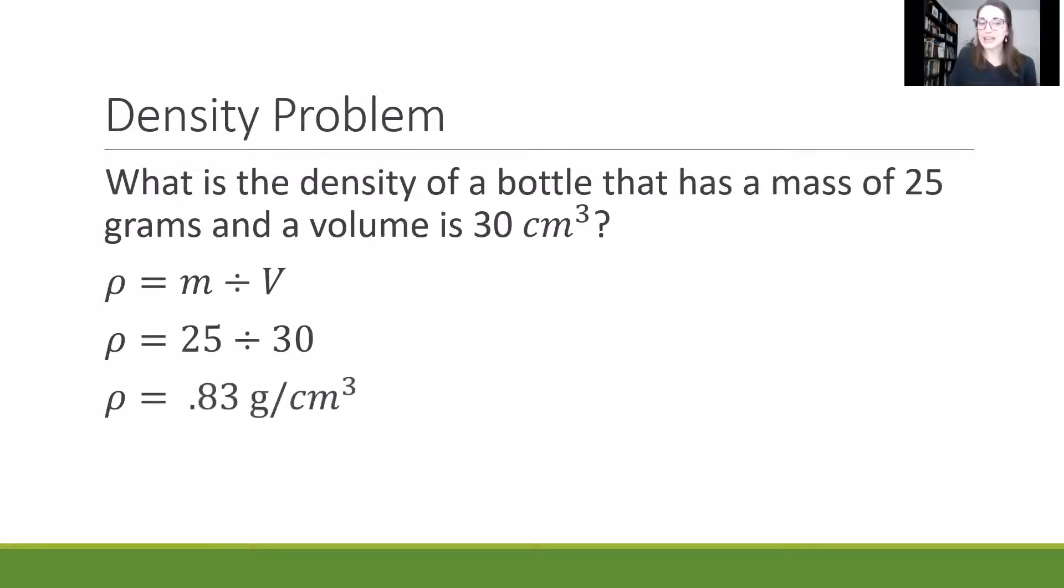And the way that we write out density would be the type of mass that we're using. So in this case, grams, and then that would be over centimeters cubed or per centimeters. So we have 0.83 grams per cubic centimeter or centimeters cubed.